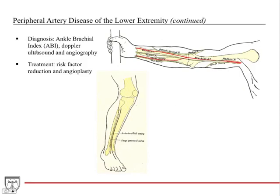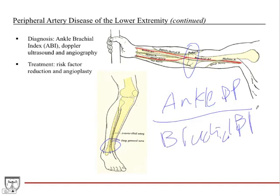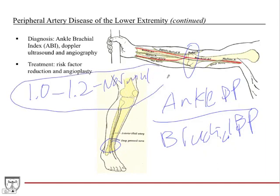Diagnosis: first do an ankle brachial index — put a blood pressure cuff around the ankle and around the arm, take the ankle blood pressure and divide by the brachial blood pressure. A ratio of 1.0 to 1.2 is considered normal; anything greater or less is at risk. You can also do Doppler ultrasound to show clot formation and arterial disease, and angiography to visualize vessels and areas of decreased perfusion — similar to pulmonary embolism or coronary angiography.